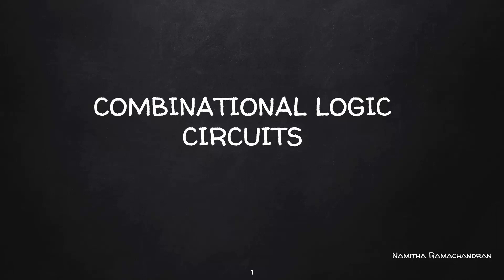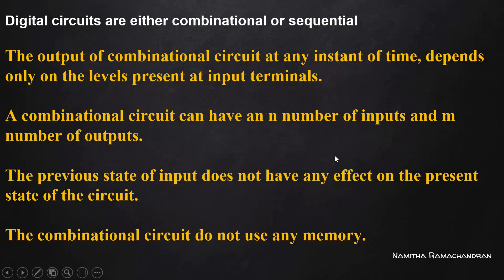Welcome back to this tutorial. In this video we discuss the design of combinational logic circuits. In a digital system we have two different types of circuits: combinational and sequential. A combinational circuit generates output that depends only on the present input — whatever input values are currently present on its input terminals. This is not the case for a sequential circuit, whose output depends on the present inputs as well as the previous state of the system.